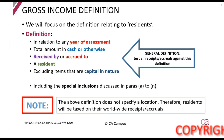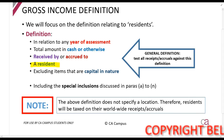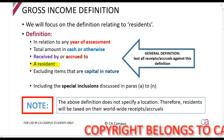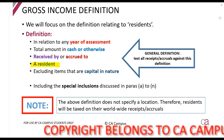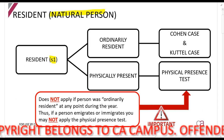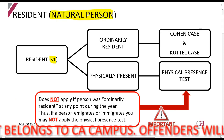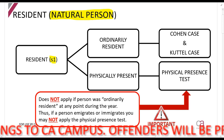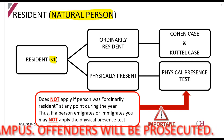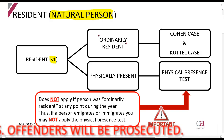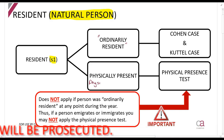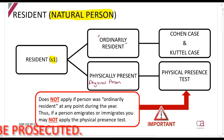In the gross income definition, we need to apply this to a resident. There is a separate definition for non-resident, but let's talk about what it means to be a resident. The definition of a resident is given in Section 1, and here we're only talking about the natural person element. It says you will be considered a resident of South Africa if you are ordinarily resident, or if you are physically present — this is the physical presence test.